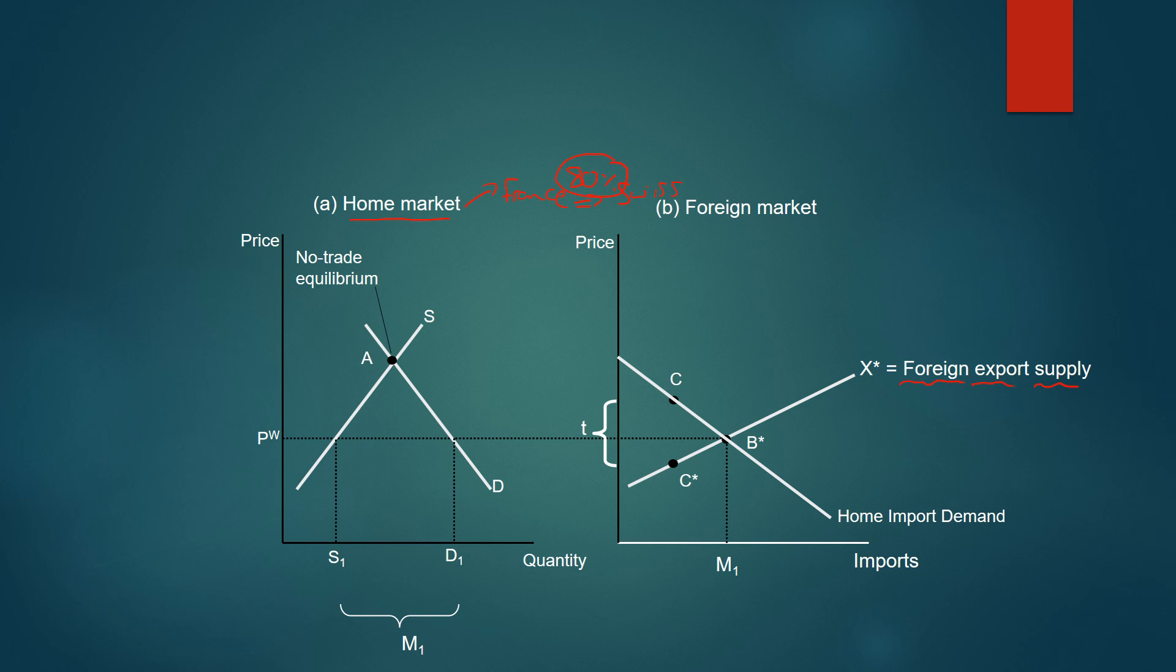In the perfectly competitive example with the small country that we saw in episode one, foreign export supply curve was horizontal because they couldn't influence that price because it was a perfectly competitive market. We're now moving away from those assumptions. So let's see here that the world price, Pw, leads to the domestic market supplying S1 and the domestic market demanding D1, therefore importing M1 units of cheese from Switzerland, M1.